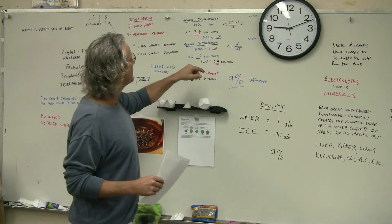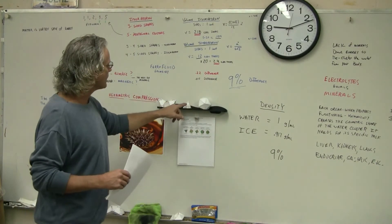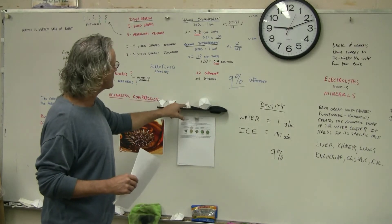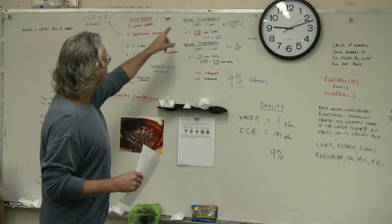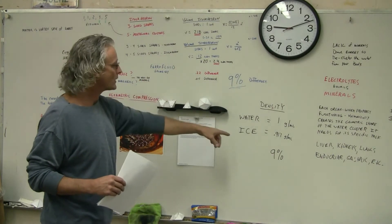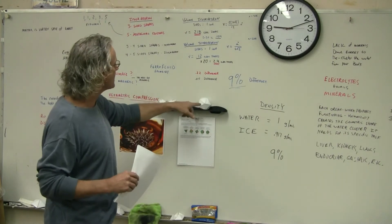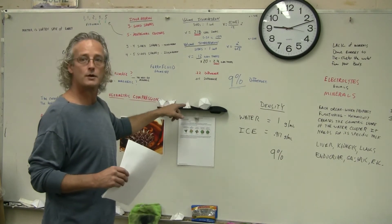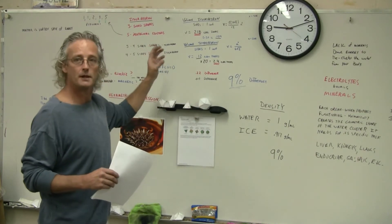Science doesn't know this. I'm calling this hexametric compression. The tetrahedral structure has to be compressed within the icosahedral water cluster in order for all this to work out. In order for water to freeze, it expands. Where does that expansion come from? It comes from the unpacking of the tetrahedral water cluster within the icosahedral structure. That's super important.